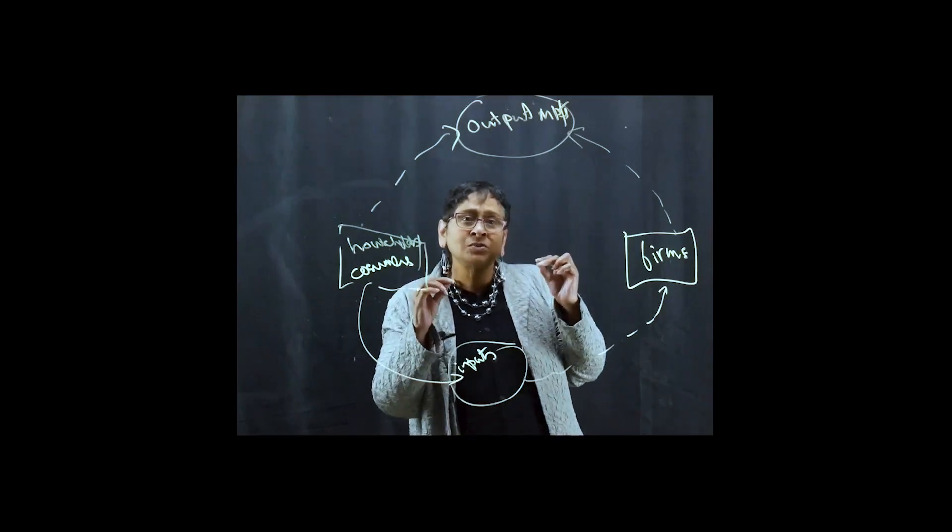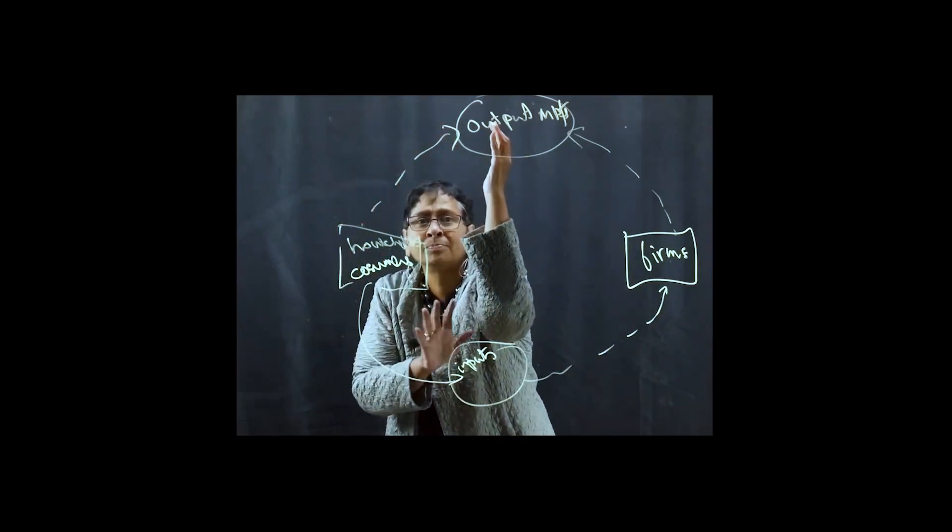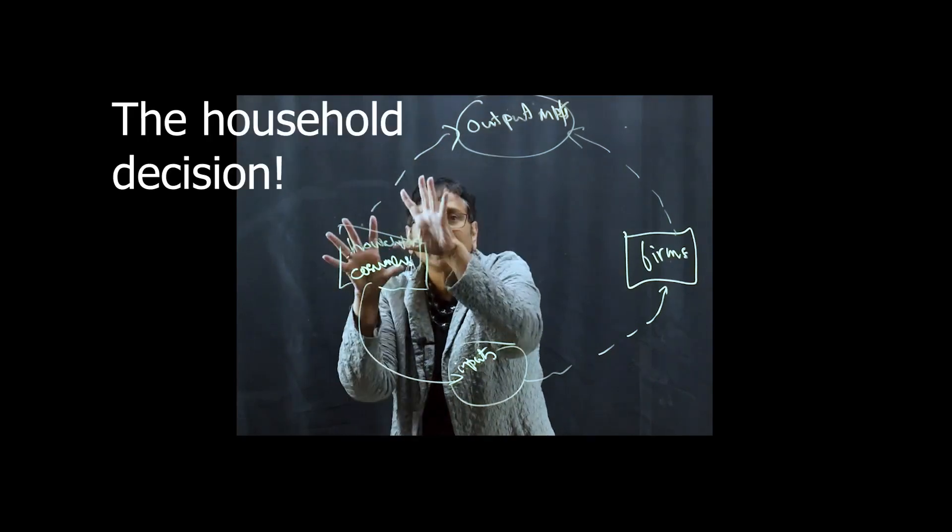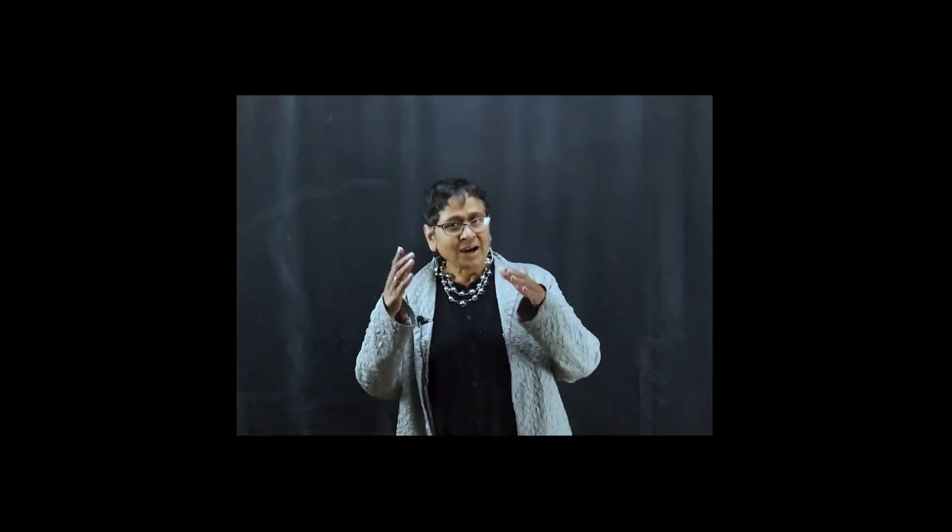But what we are interested in for this segment is this part of the story, the household decision. We are going to drill down a little bit further. So the household is making decisions and that's what we are focusing on, which is on the demand curve in output markets and as it happens when we come to input markets, the supply curve in input markets, because households are the people supplying labour.